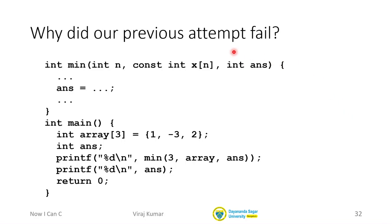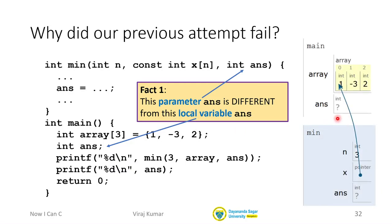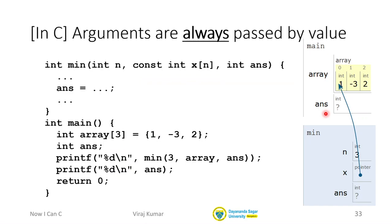Let us take a closer look at this failed attempt because in doing so we will learn a lot about how data is actually passed when we make function calls in C. We said that this parameter ans is not the same as this local variable, even though both have the same name ans and both have the same type int. Arguments are always passed by value.